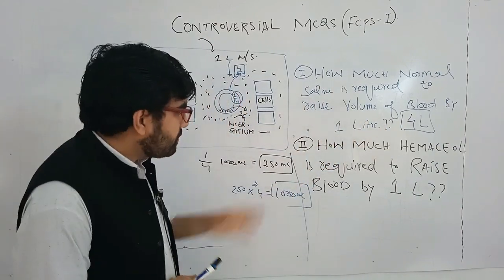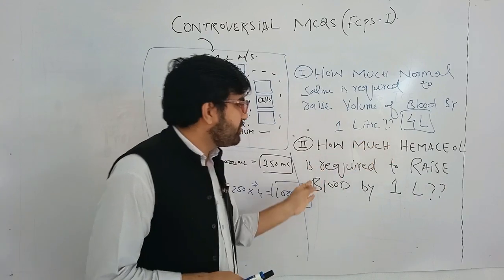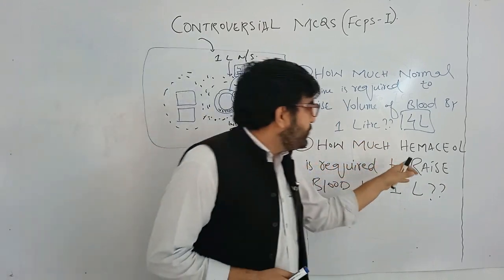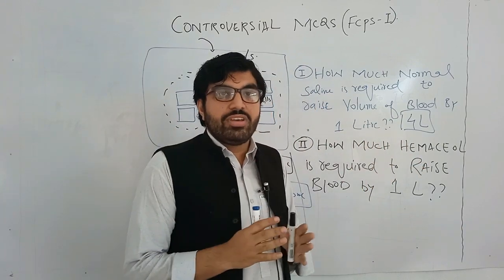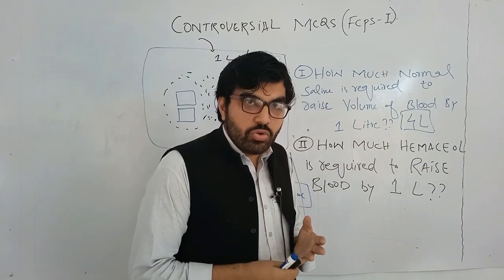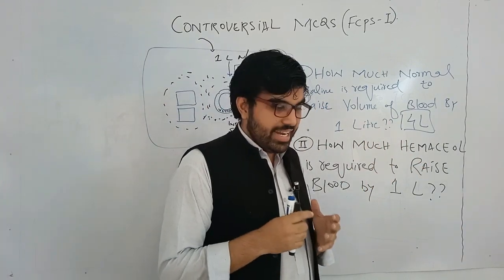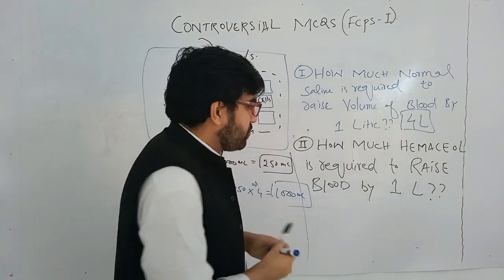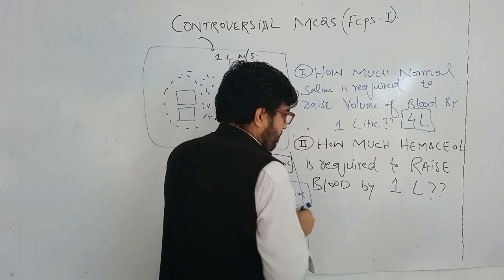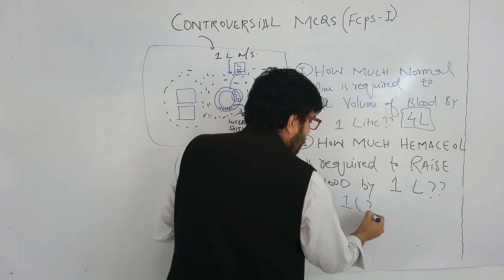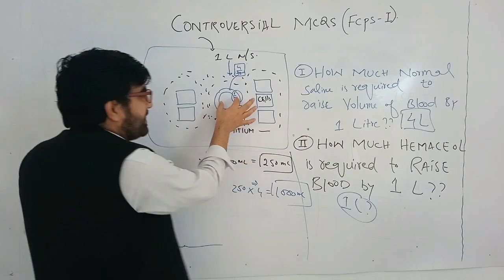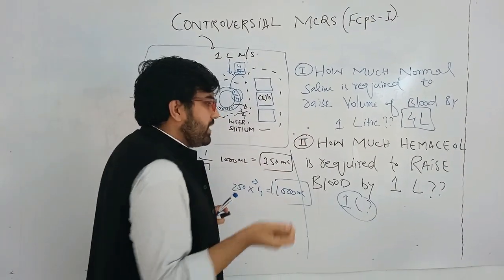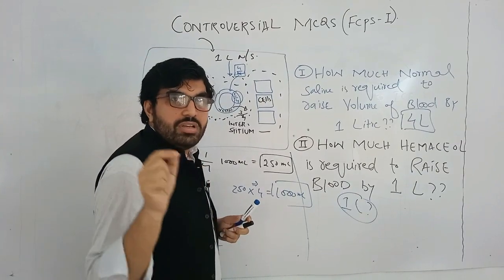Another MCQ: how much Haemaccel is required to raise blood volume by one liter? We must know the nature of Haemaccel — it is isotonic and does not leak out of the vascular compartment. So the answer is one liter, because any amount introduced stays within the vascular compartment and raises blood volume by that same amount.